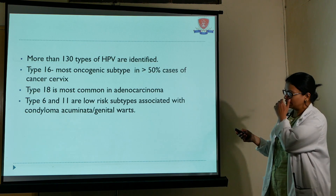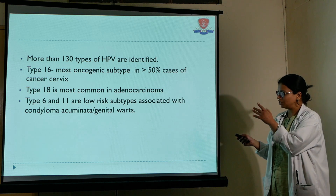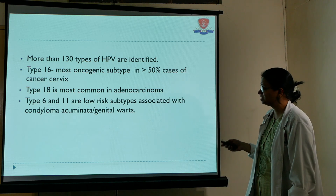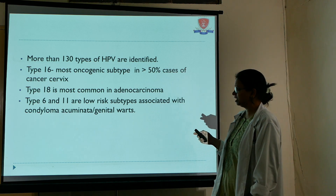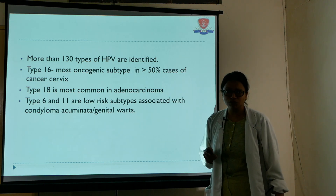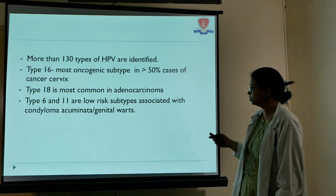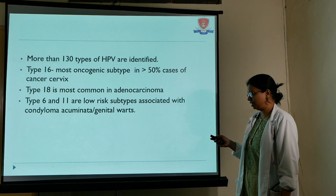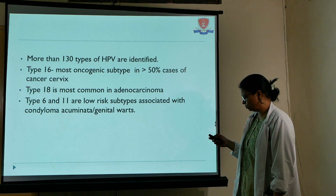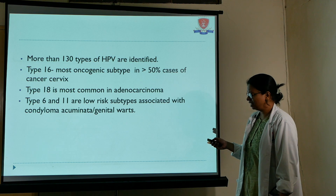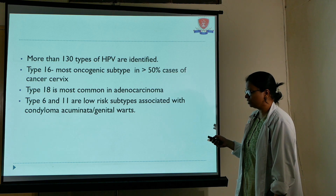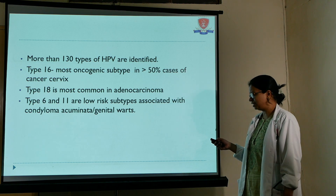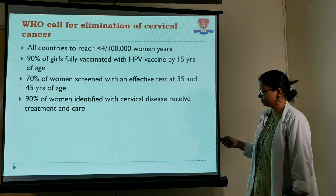More than 130 types of HPV are identified. Type 16 is the most oncogenic subtype, responsible for more than 50% of cervical carcinoma cases. Type 18 is the most common in adenocarcinoma. Types 6 and 11 cause condyloma acuminata and genital warts.